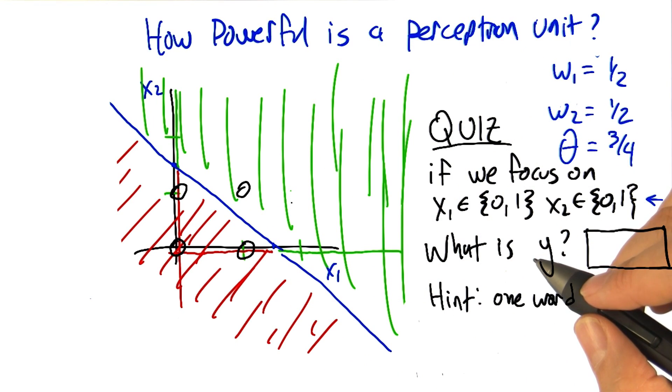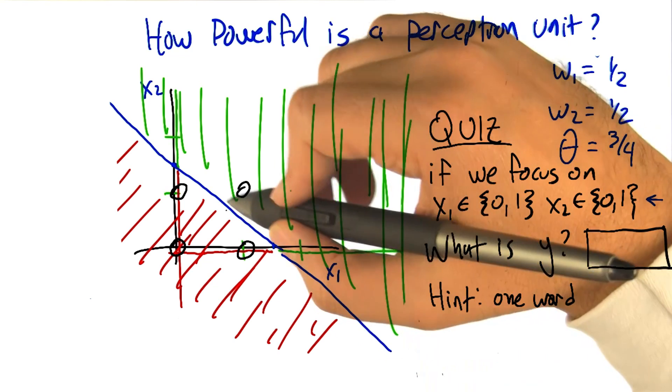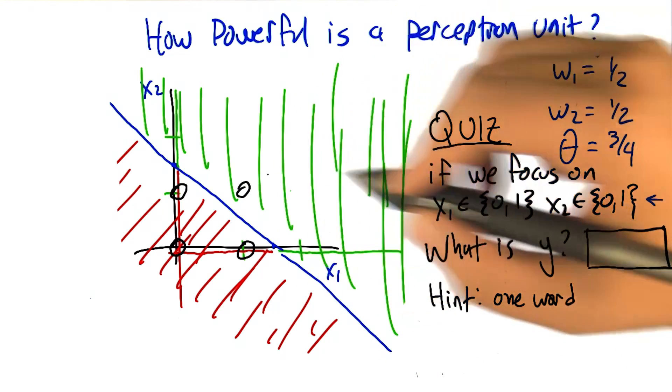And if you look at it, the only way that you get something above the line is when both are true. And that is called 'and'.